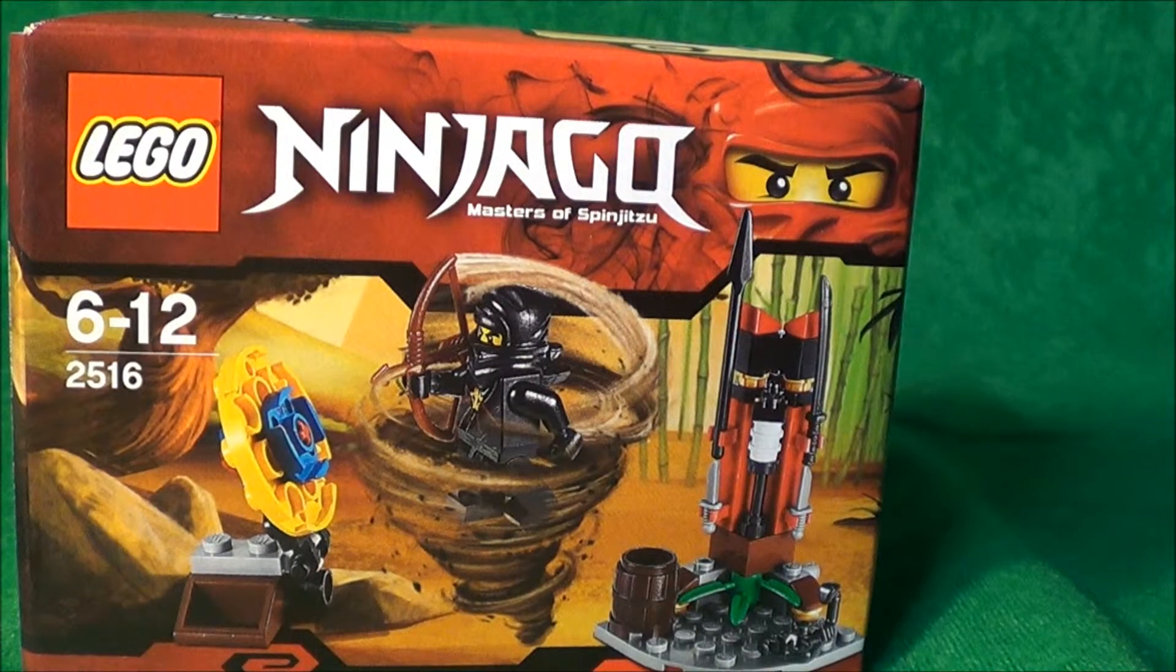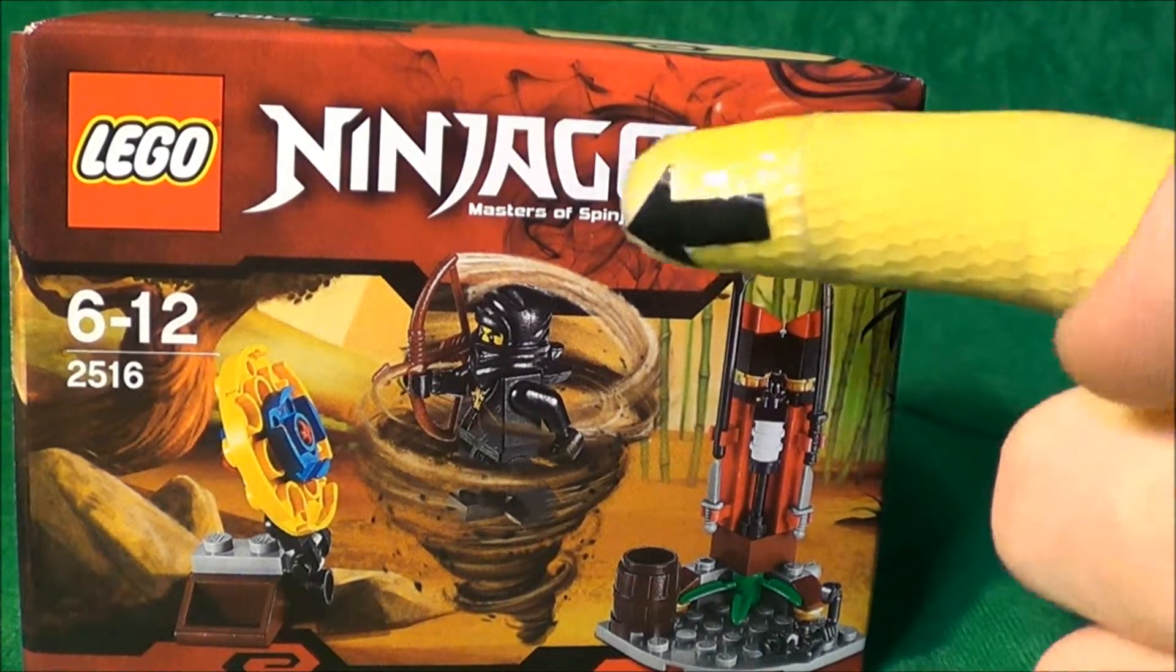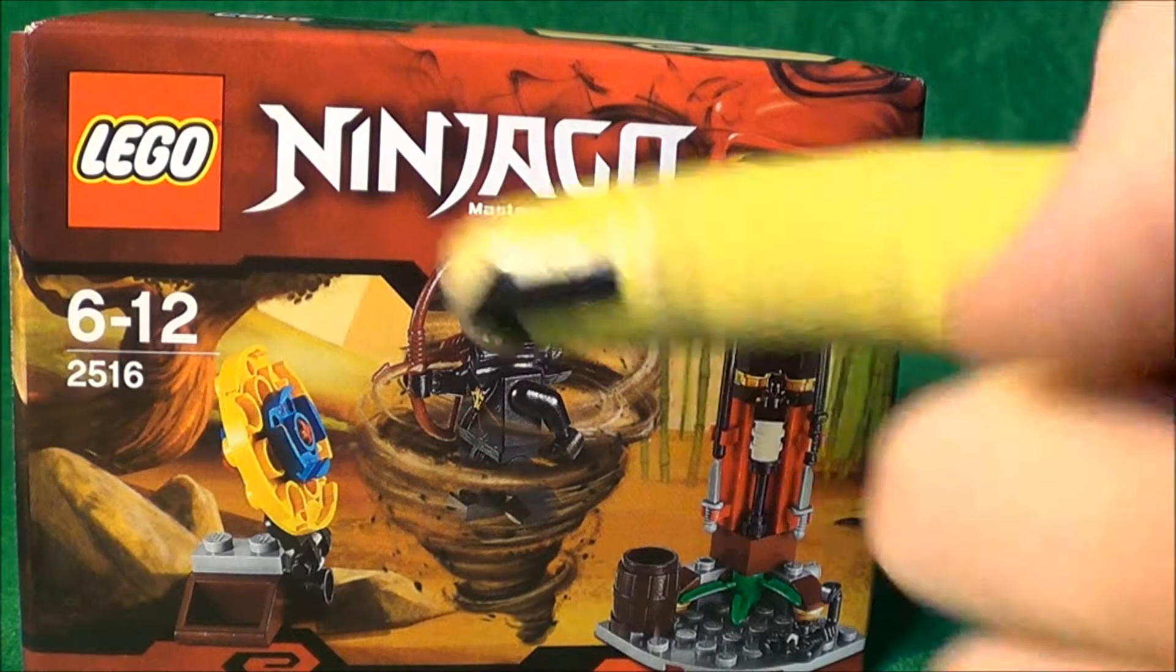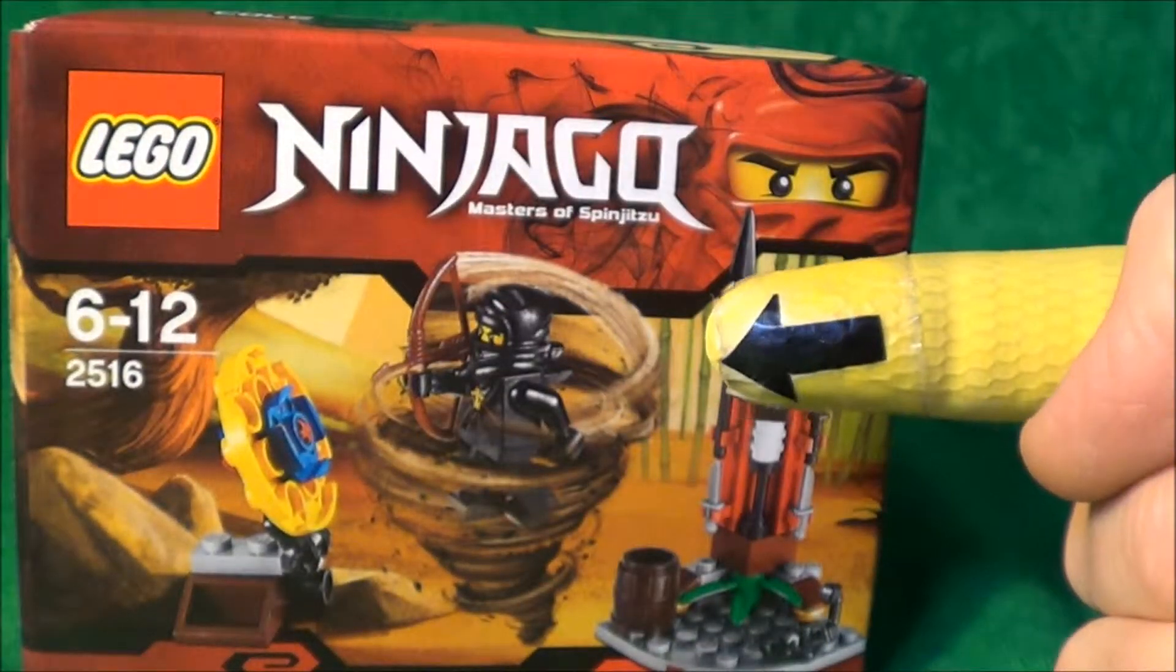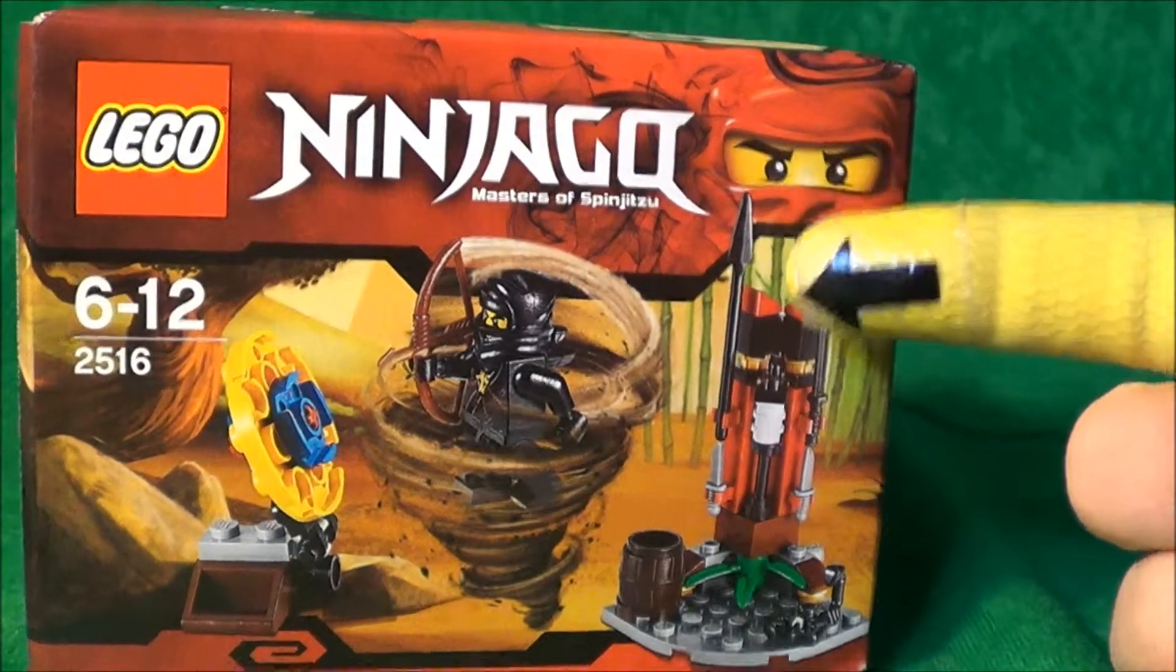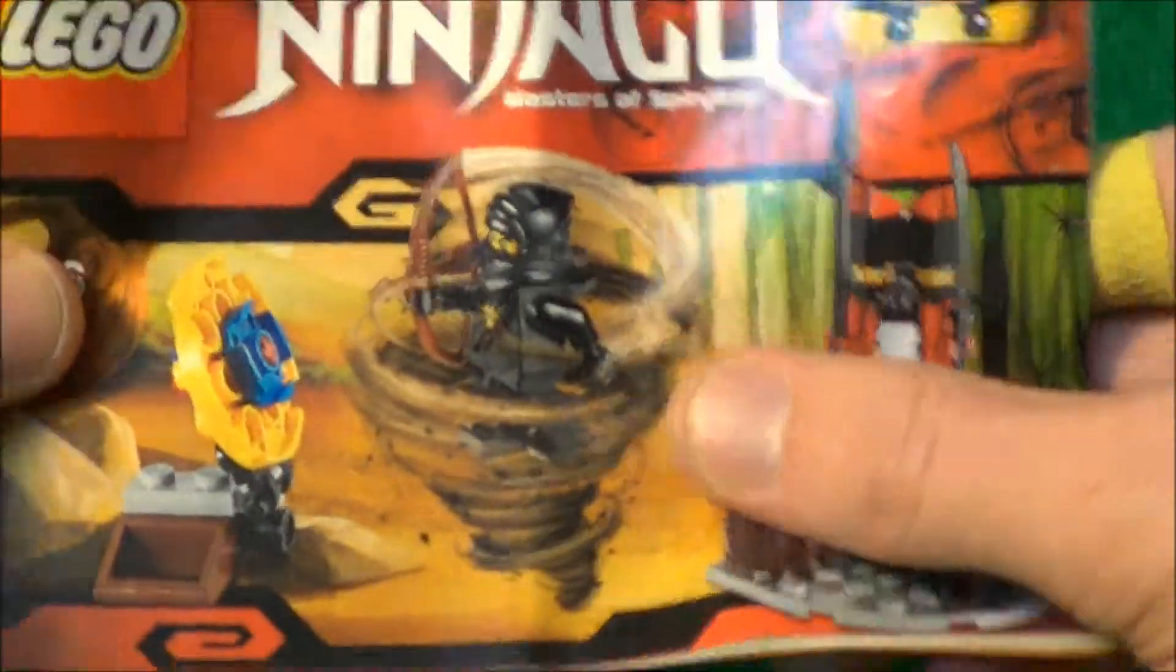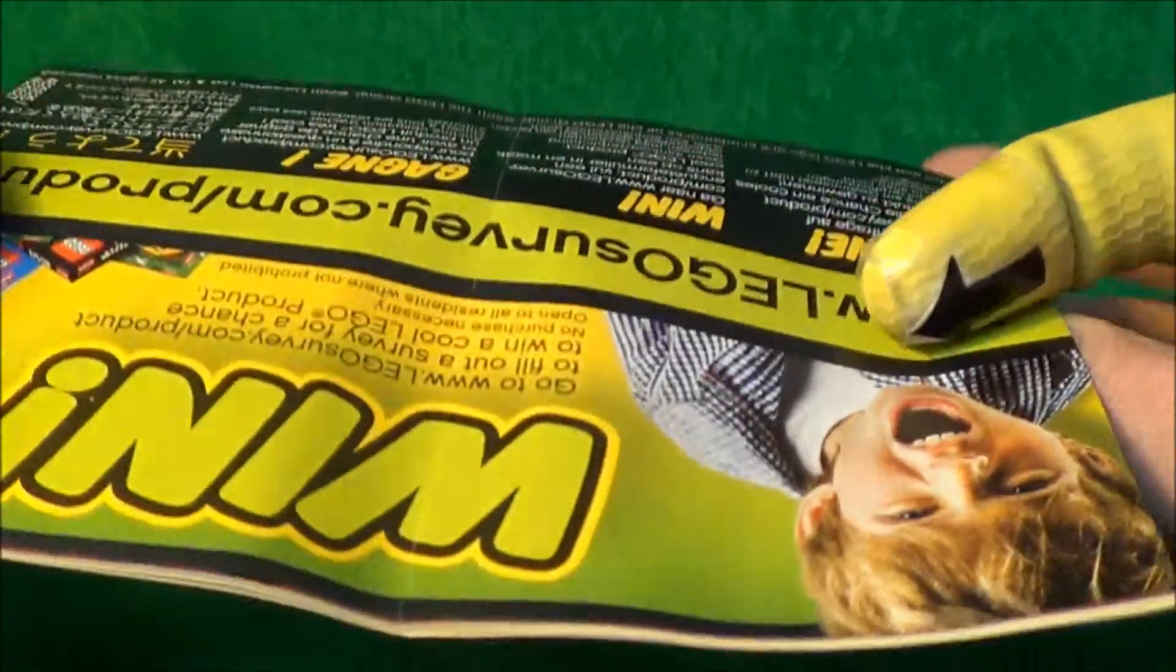Hello, and today I'm going to be taking a look at Ninjago Masters of Spinjitzu LEGO set number 2516. I picked this up for £6, so let's get it open and see if it's worth the cash. Here is the instruction manual. It does feel quite thin, same design that we've seen on the front of the box and the win on the background.